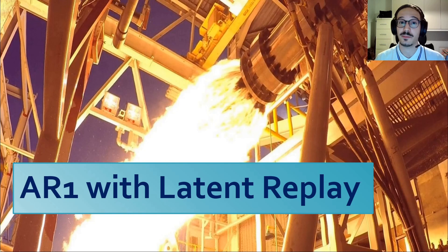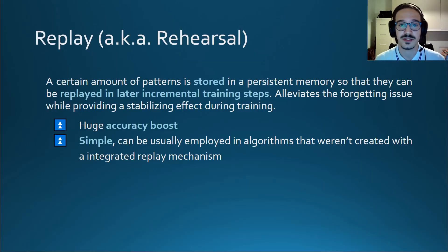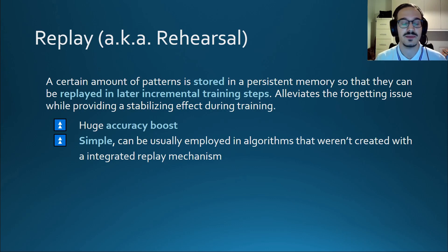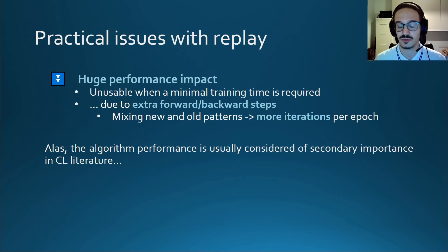Let's talk about the proposed approach by first looking at one of the most commonly used techniques in continual learning, which is replay. Simply put, replay means selecting and storing a few patterns from the current incremental batch so that they can be replayed in later steps. This greatly boosts accuracy metrics because it helps alleviate forgetting and provides a stabilizing effect. Moreover, replay is very simple and can usually be added on top of algorithms that were not created with replay in mind. No surprise — it has become very popular.